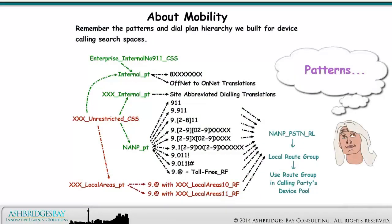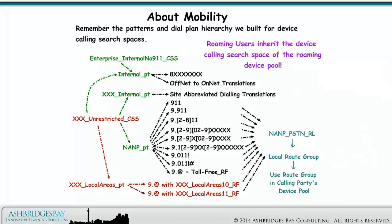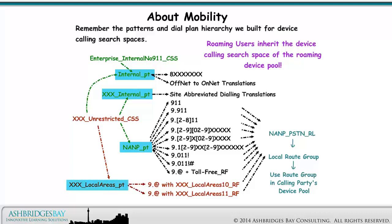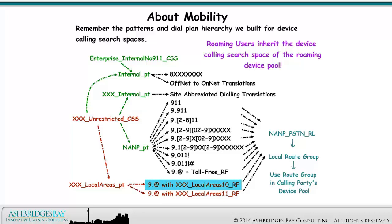Remember the patterns and dial plan hierarchy we built for device calling search spaces. Roaming users inherit the device calling search space of the roaming device pool. Each site will have a site-specific unrestricted calling search space — XXX unrestricted CSS — containing the internal partition, the site-specific internal partition (XXX internal partition), the NANP partition, and the site-specific external partition (XXX local areas partition). We have a pattern with the XXX local areas 11 rope filter to handle E.164 gateways, and we remove the delay for 7-digit dialing by replacing the general 10-digit patterns with site-specific patterns for the local area codes using the 9-dot-at with XXX local areas 10 rope filter.